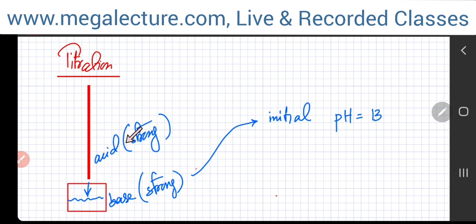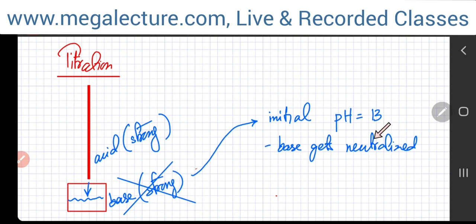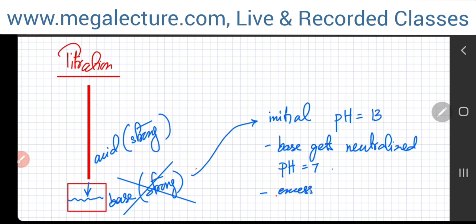As soon as you start pouring the acid, the titration starts. The base will eventually get neutralized — salt and water are produced and the pH becomes equal to 7. If you keep pouring acid even after the base is gone, the solution becomes acidic because you're adding excess acid. The pH will then start to decrease, coming close to pH 1 or 2. That's your typical pH curve for an acid being poured into a base.